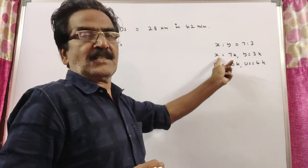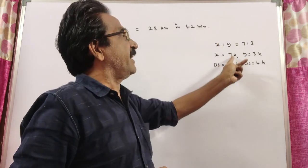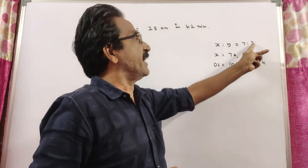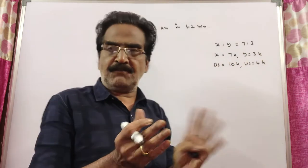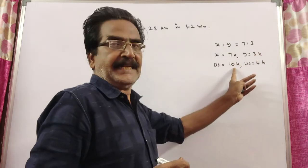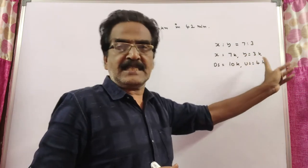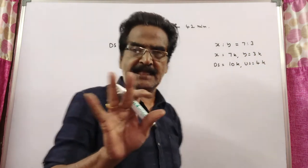That means boat velocity is 7k and stream velocity is 3k. Then it implies downstream velocity, we know x plus y, that is 7k plus 3k equals 10k, and upstream velocity 7k minus 3k, that is 4k.